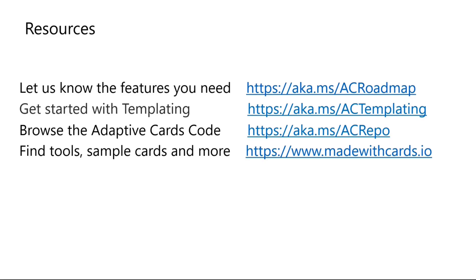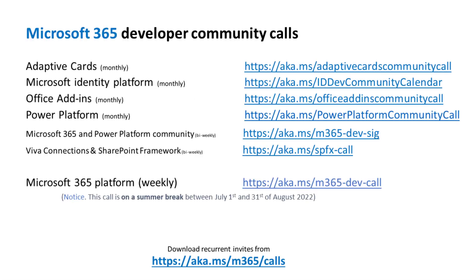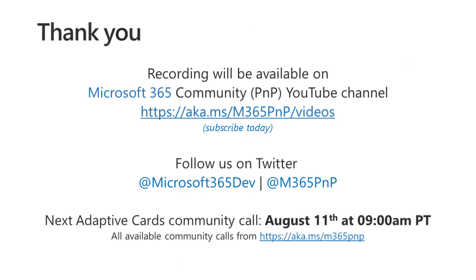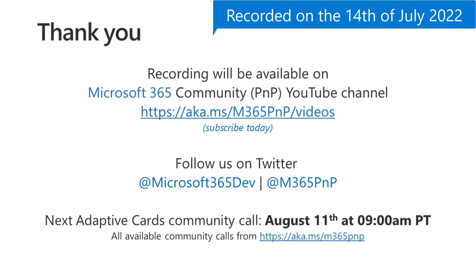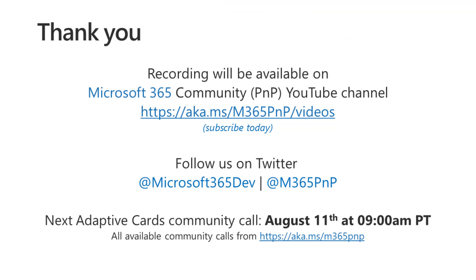Thank you everyone for attending the July Adaptive Cards Community Call. You can find short links to all resources related to adaptive cards — our roadmap, how to use adaptive cards, our repo where we have bug reports, issues, and feature requests. For general help, sample cards, and previous community call recordings, visit adaptivecards.io. You can also find developer community calls and their cadence for all M365 partners. With that, we end the July Adaptive Cards Community Call — hope to see you in the August community call.